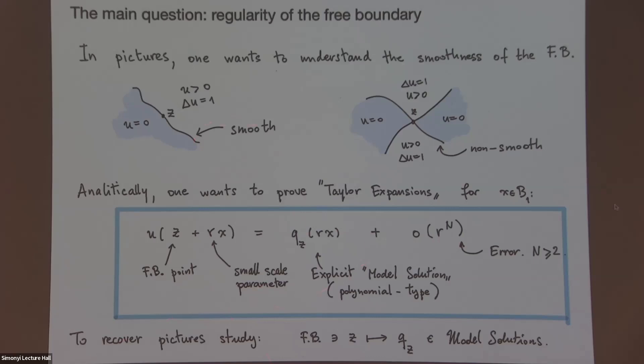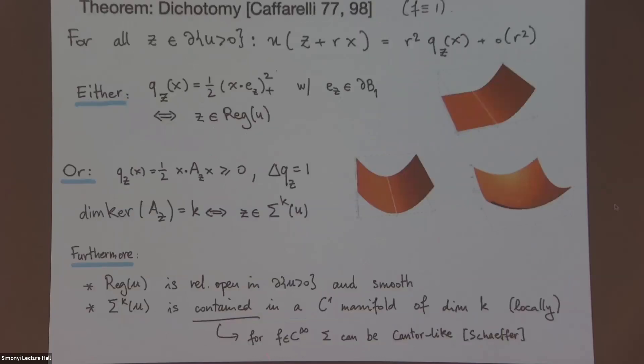So the prototype of this kind of statement is a theorem by Caffarelli from the seventies, a breakthrough in the area. So you are, let's take f equals 1 for the moment, but the statement is essentially the same, which proved that such an expansion, it holds up to order two, which is the first non-trivial order. And it's by no means trivial already to say that you have some sort of tangent object, which is unique and which has the correct rate of convergence, let's say. What Caffarelli found out is that this Q_z, essentially can be only two things, and they are separate and only one of the two atoms.